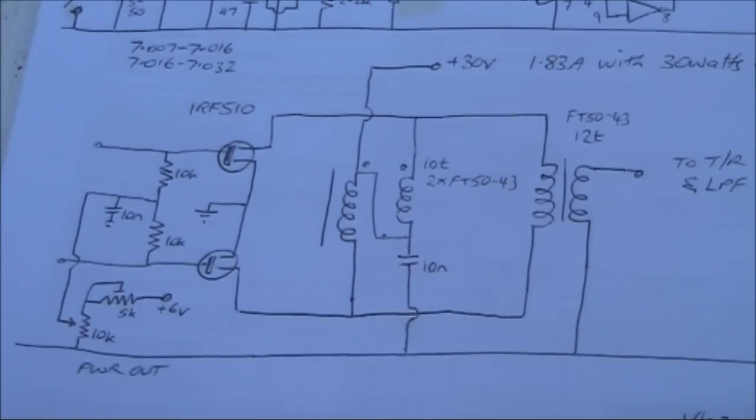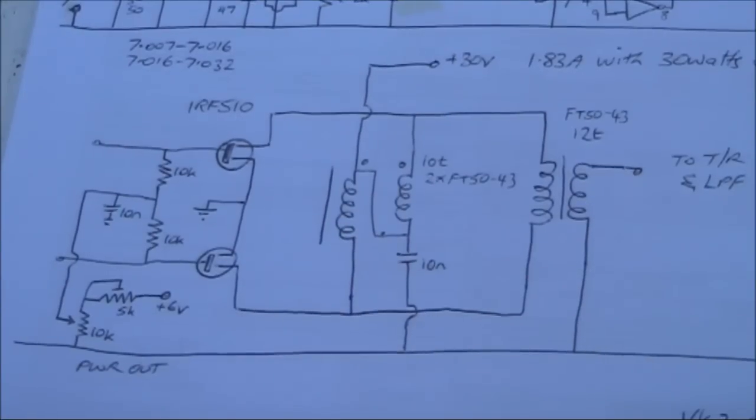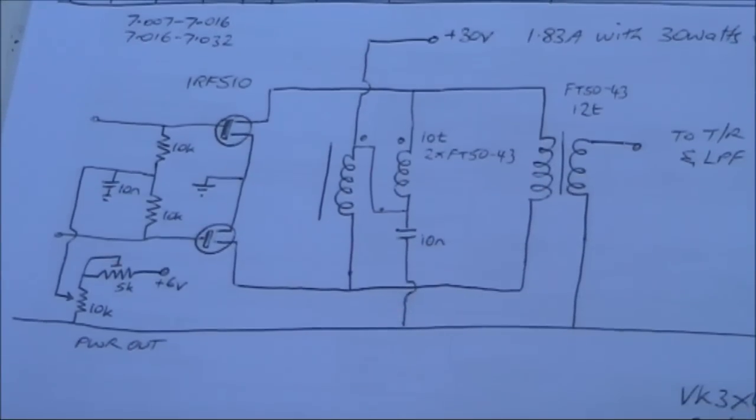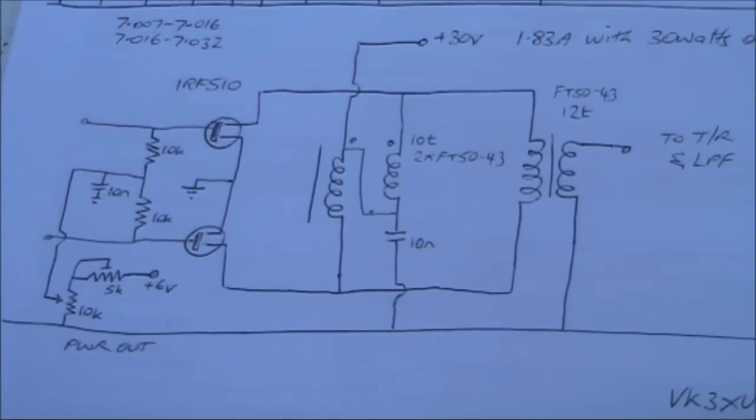The rest of the transceiver is off a 12 volt supply. But for the power amplifier, it's 30 volts. And then there's a capacitor going down to earth from that point.